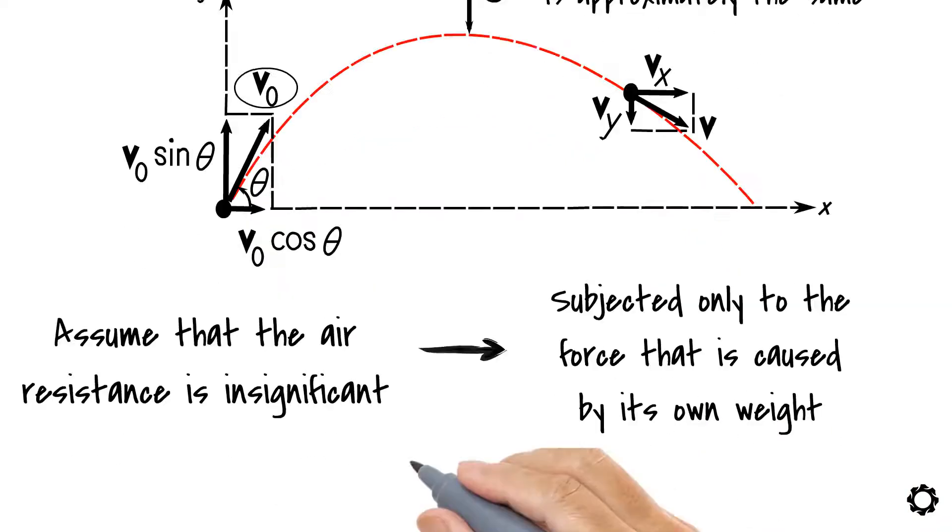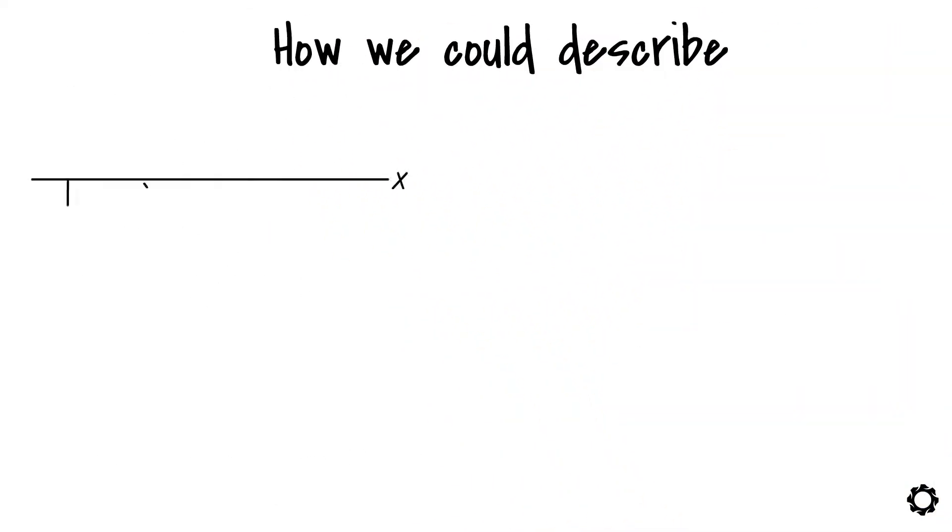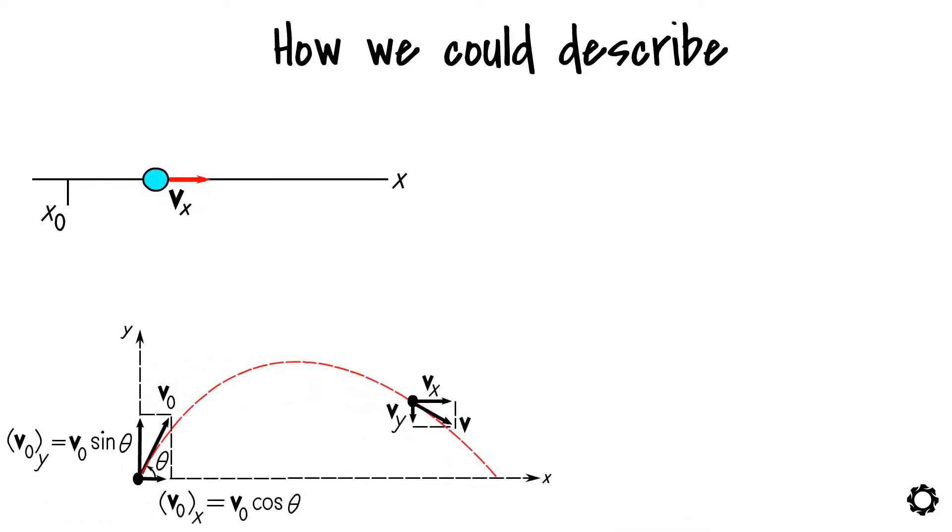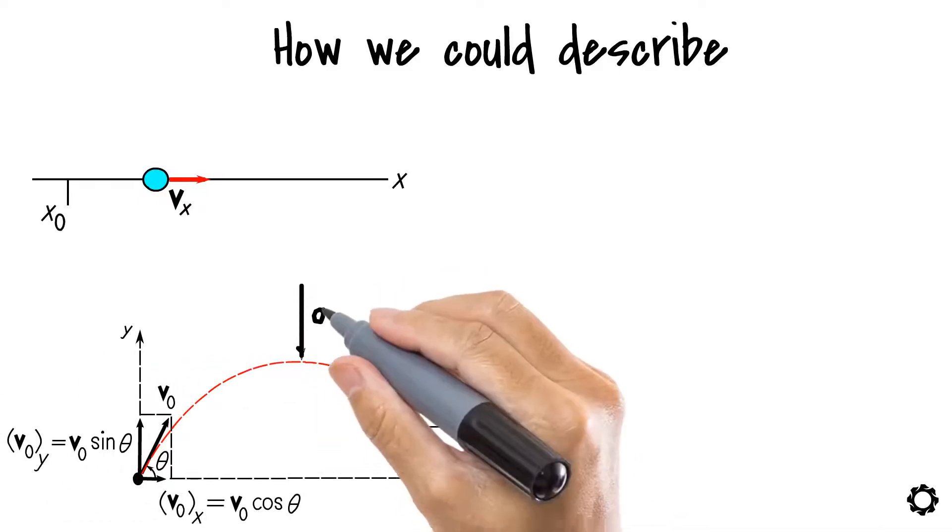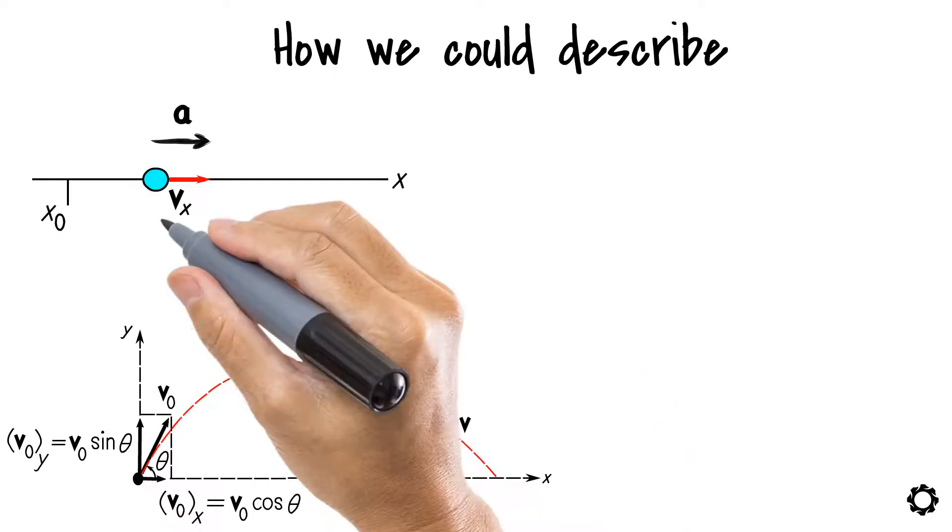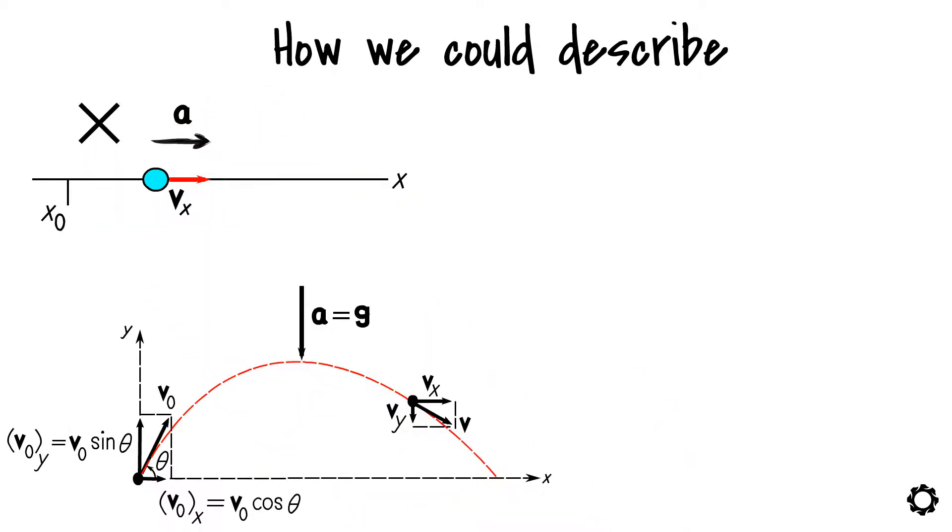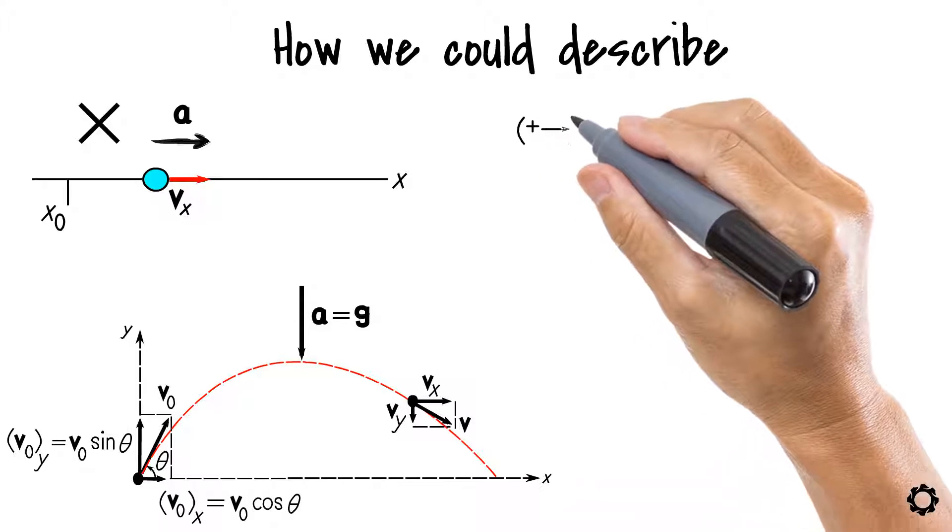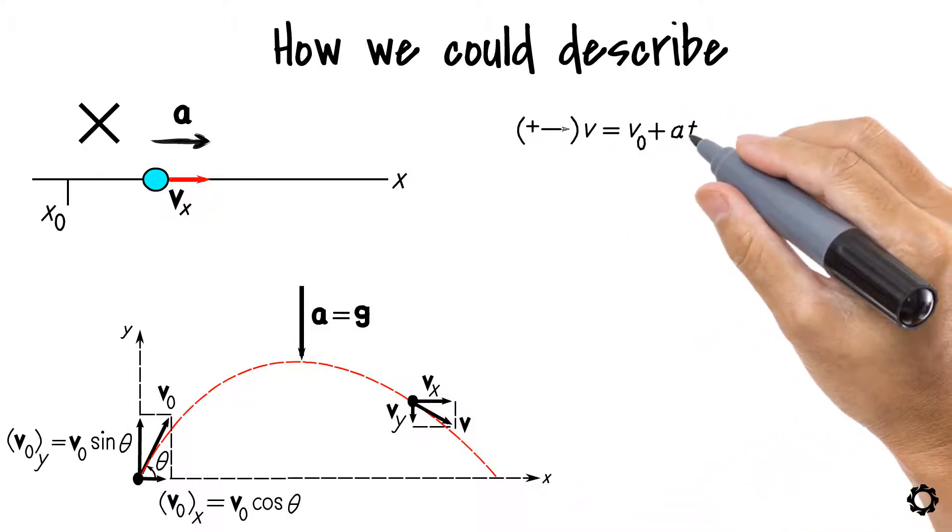Let's move on now and see how we could describe the horizontal motion of our projectile. Because our projectile only experiences vertical acceleration, it doesn't experience any acceleration in the horizontal direction. Therefore, we obtain the following kinematic equations for the horizontal motion of our projectile.